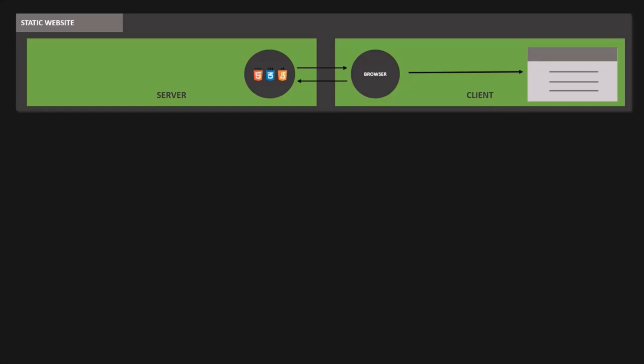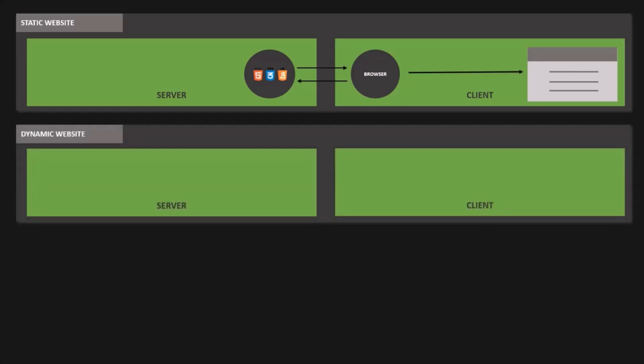Dynamic websites are different from static websites as they are usually built on the server. Dynamic websites usually contain a database, and we also have a backend application running on the server. This backend application can be built using Node.js, Python, PHP, C#, etc. This backend application fetches data from the database and, together with a predefined template, builds each page that the user requests dynamically based on the data coming from the database.